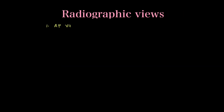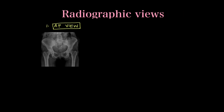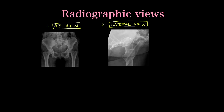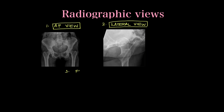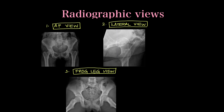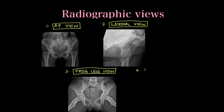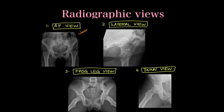After the anatomy, we will now move to radiographic views — the common x-ray views taken for the pelvis and bilateral hip. There is the AP view, the lateral view, the frog leg view, and the Dunn view, which is not done very often now.